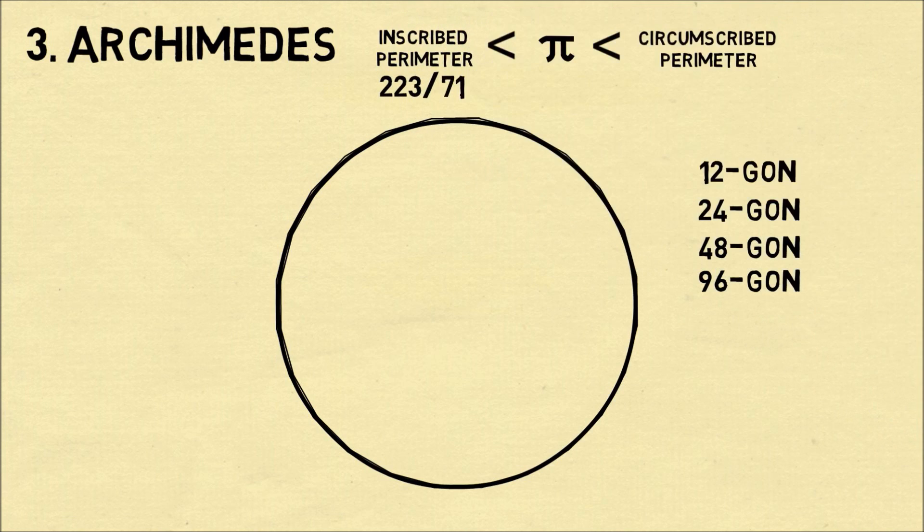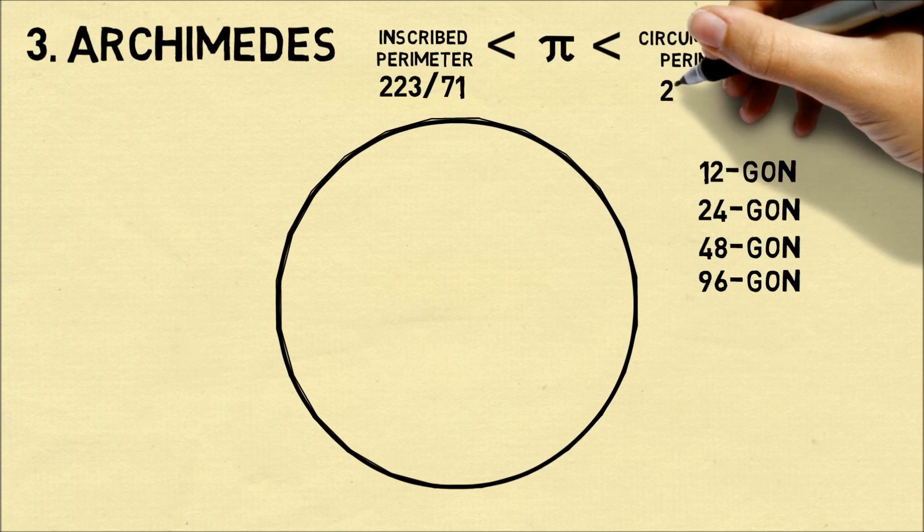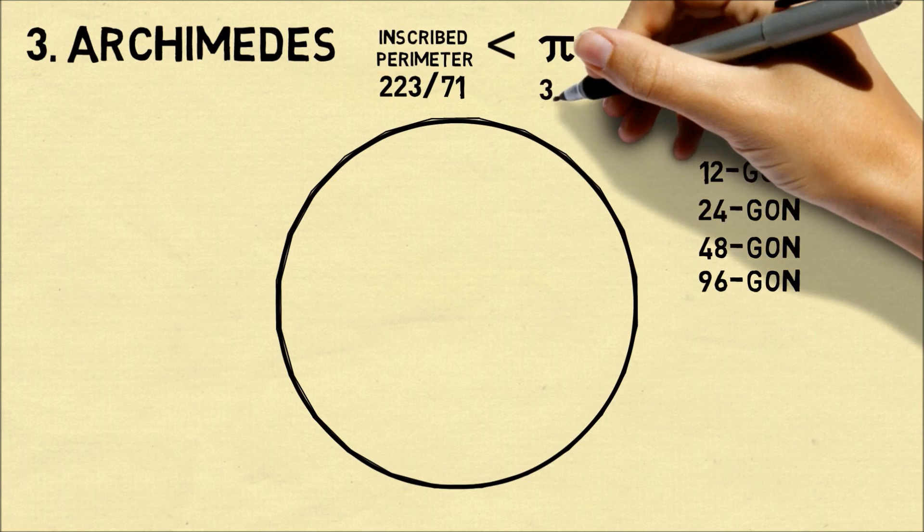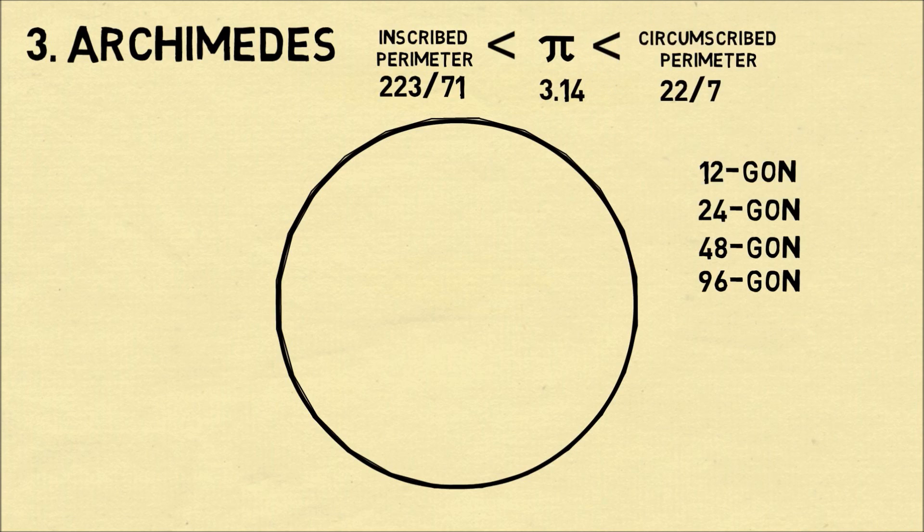He got all the way to the 96-gon in which he found that pi must be wedged between 223 over 71 and 22 over 7. This gave him an approximation that pi is about 3.14, which was very good and often practical.